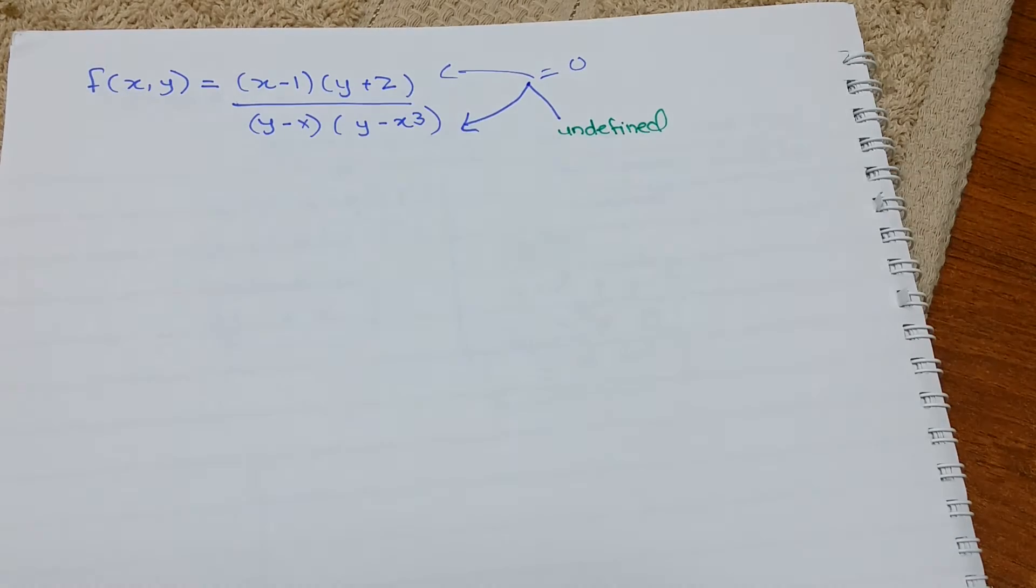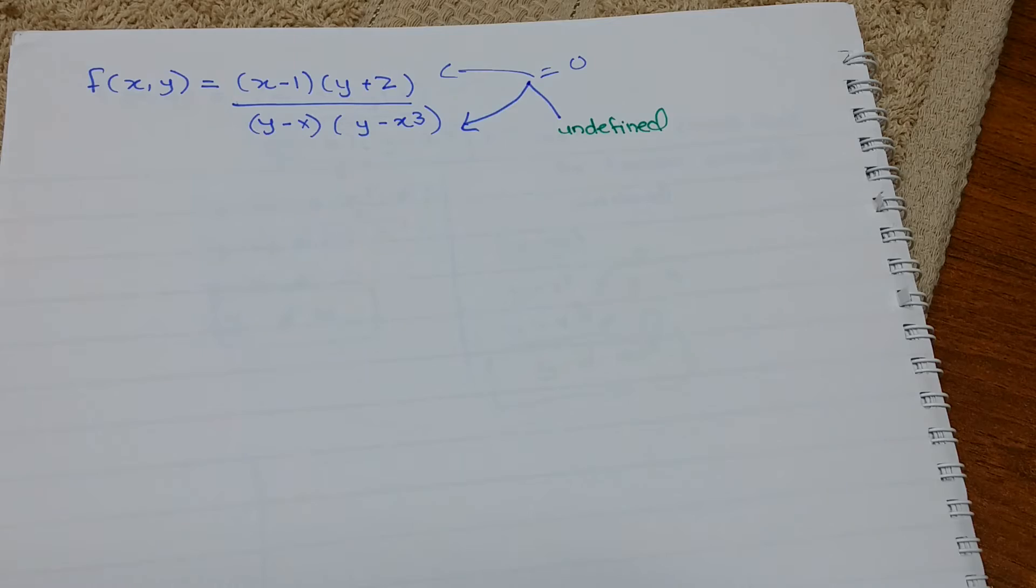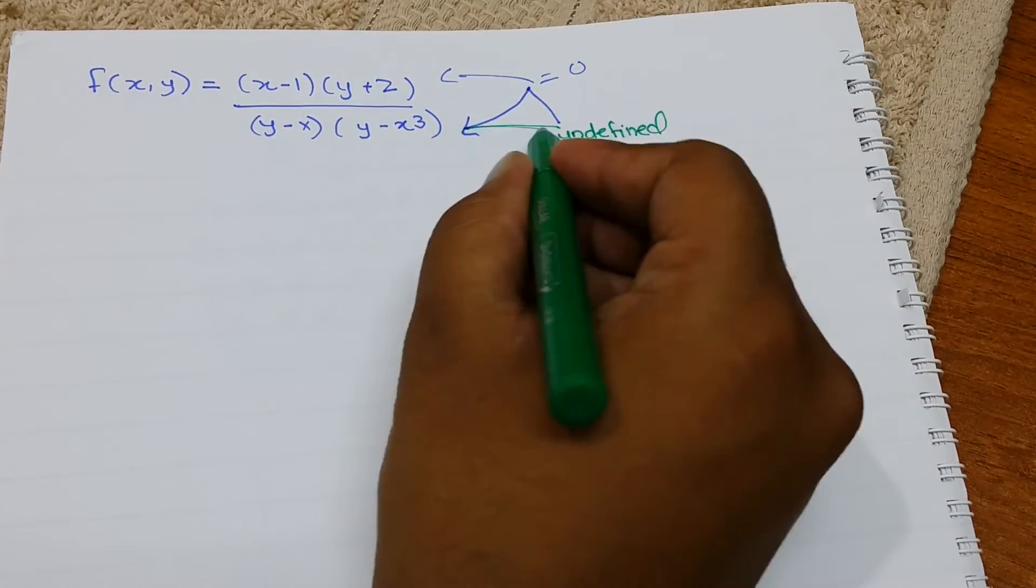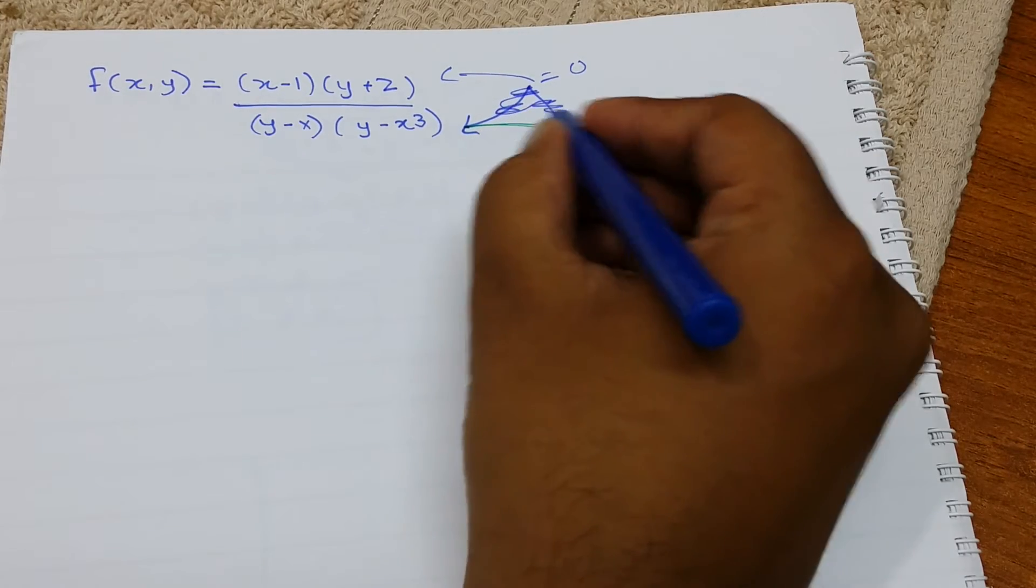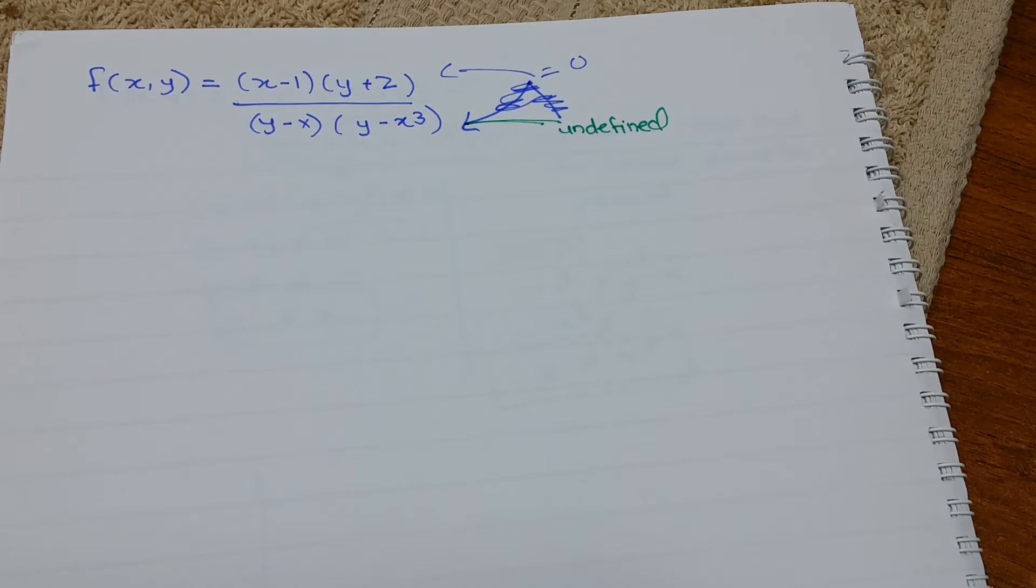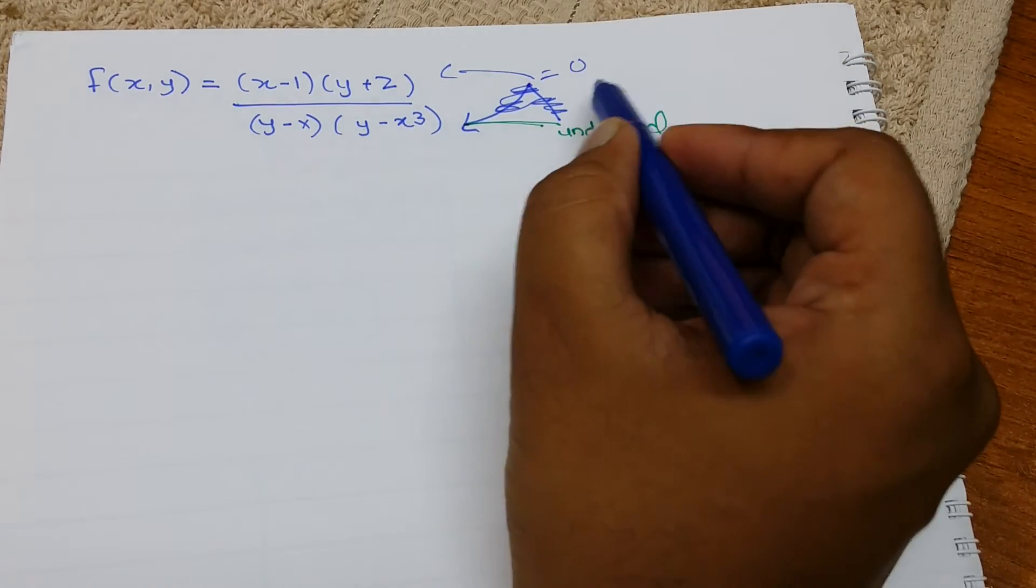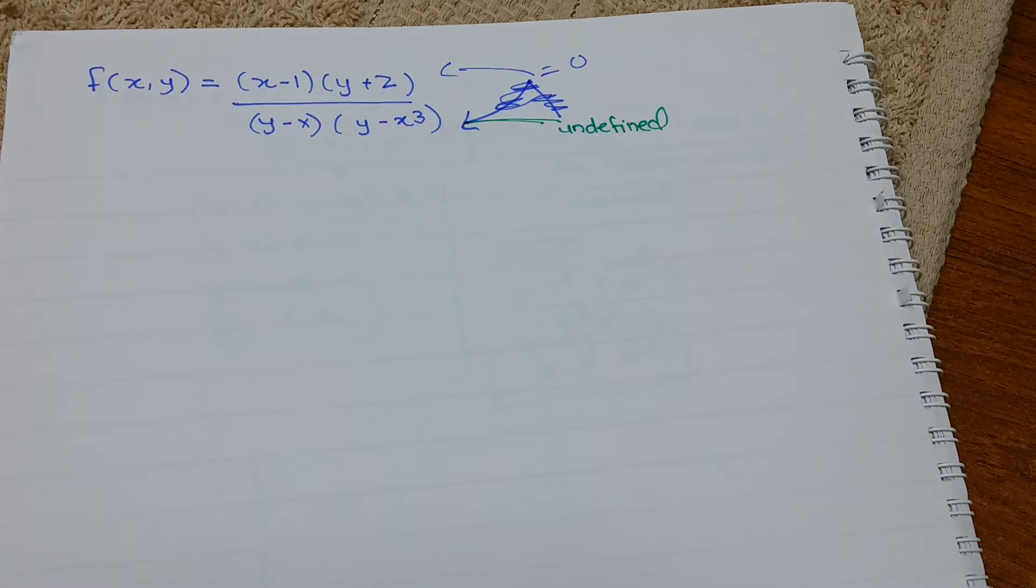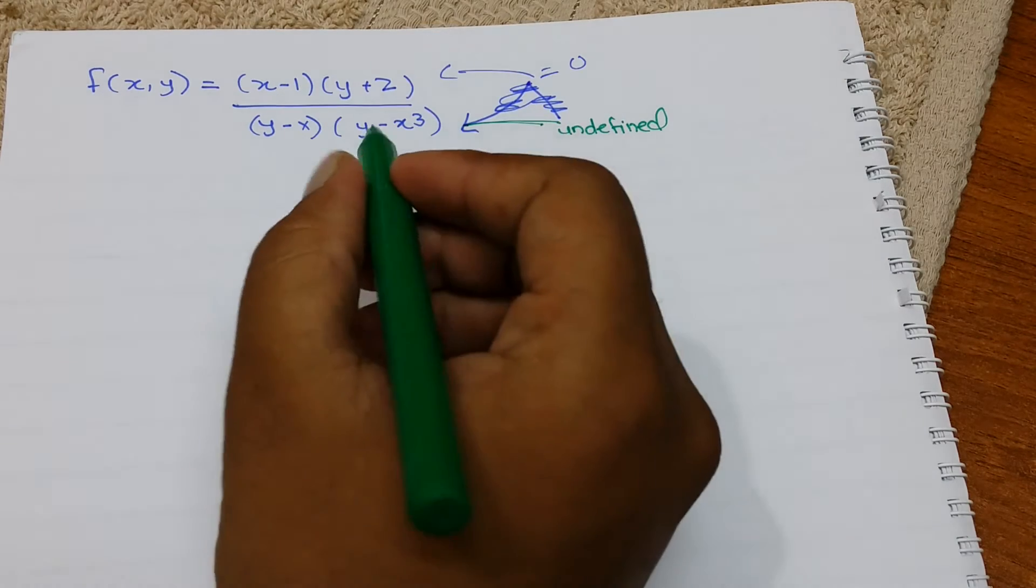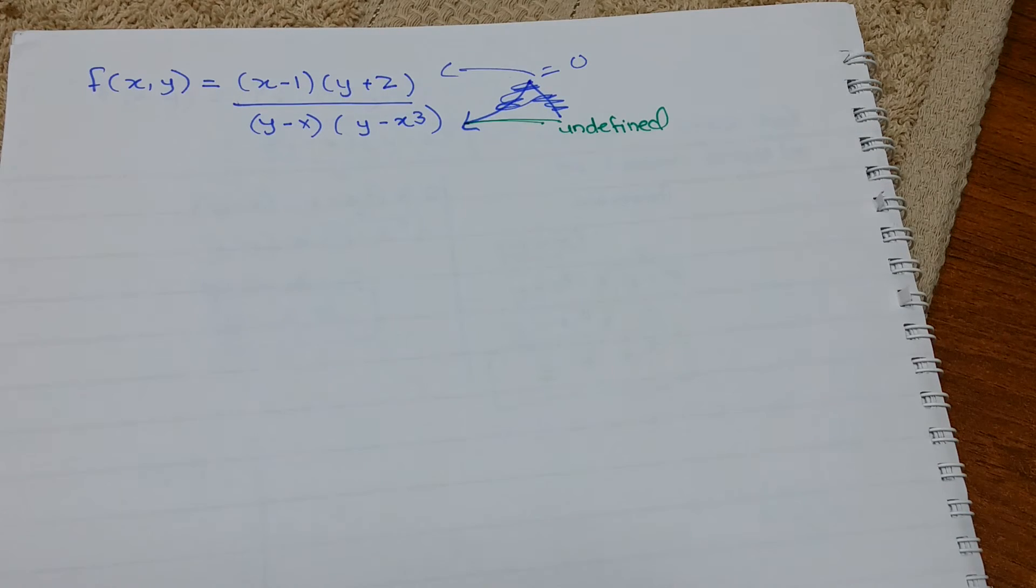And we don't want that. So if 0 comes here, no problem. Zero comes in the denominator, the function will be undefined.